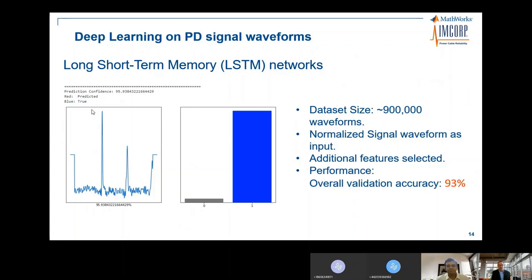The deep learning approach applied a long short-term memory network to partial discharge time series, using the time-domain signal as a feature along with other added features. This model was employed on a pool of about 900,000 human-labeled signal waveforms. The overall validation accuracy is 93%. Deep learning benefits from more data, and studies have been performed on larger pools.